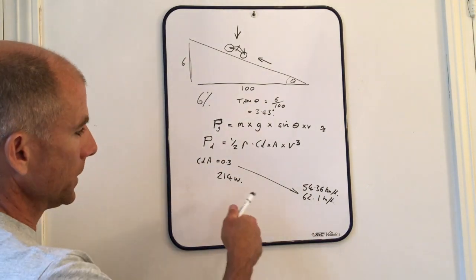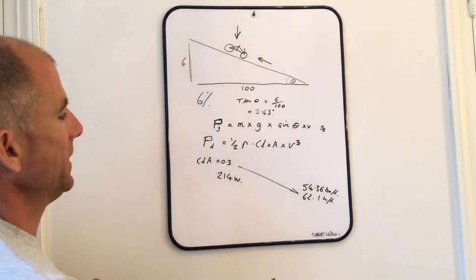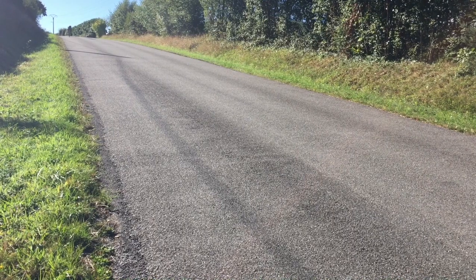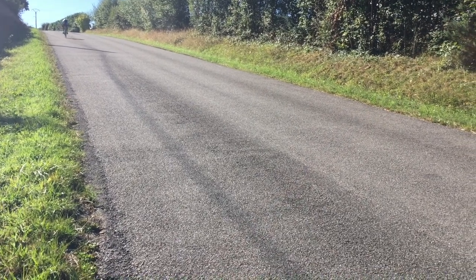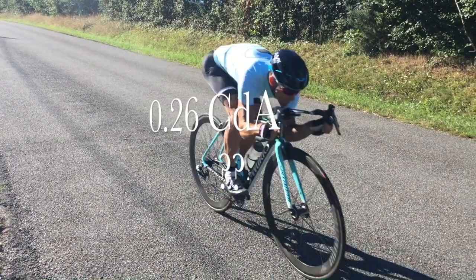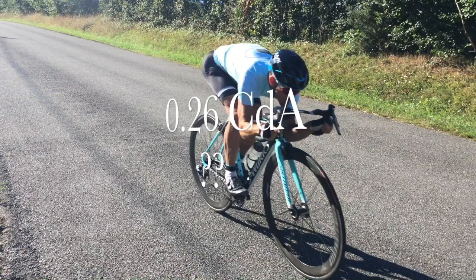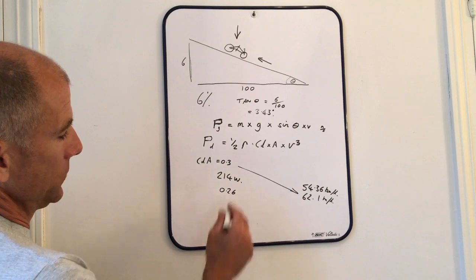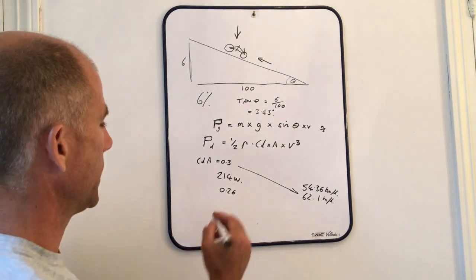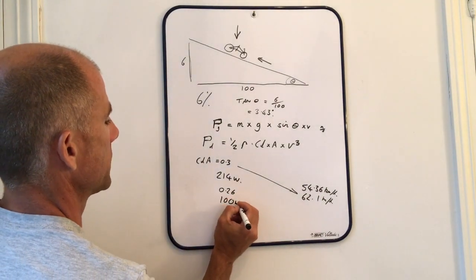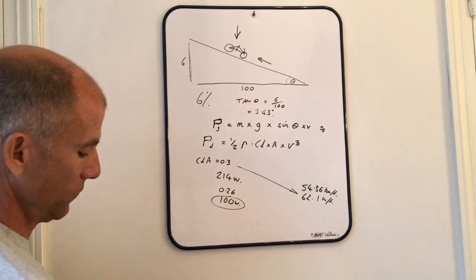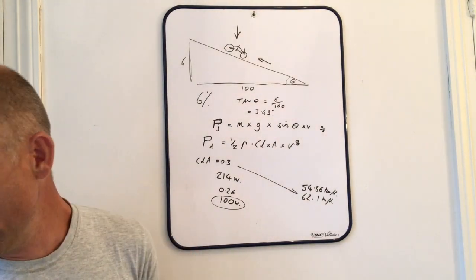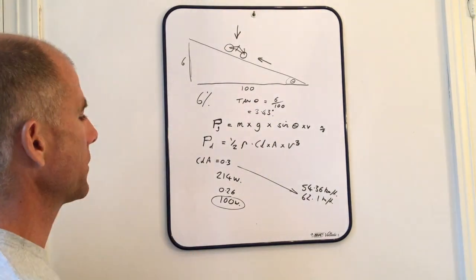Just to do one more example, if we use perhaps a slightly more realistic super tuck value of 0.26 instead of 0.23, so it's not quite as extreme, it's fairly achievable I would say, if you're fairly aero generally, then this 214 watt figure drops to 100 watts. This is for a speed of 58 kilometers an hour.